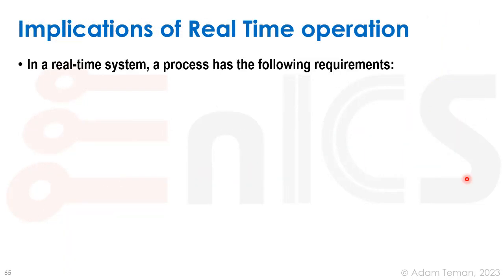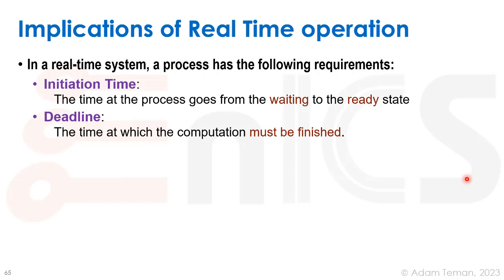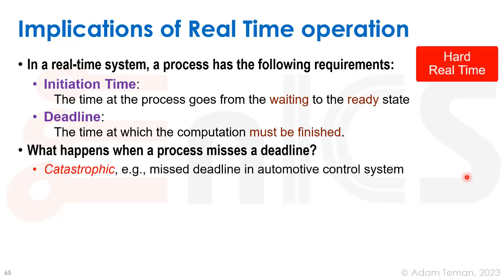What are the implications of real-time operation? In a real-time system, a process has two key requirements: initiation time — when the process goes from the waiting to the ready state — and the deadline, which is when we must finish the computation. What happens if we miss a deadline? There is hard real-time, where missing a deadline causes a catastrophic event. For example, missing a deadline in an automotive control system could cause a braking failure.